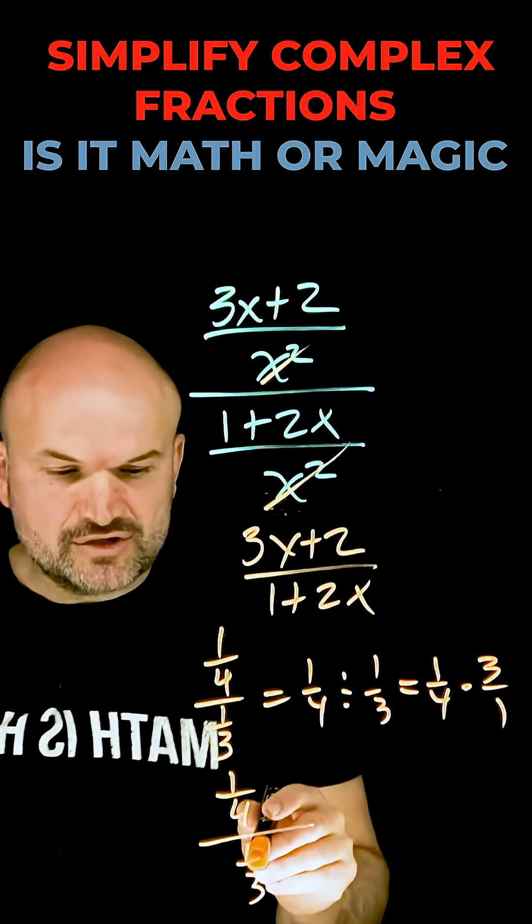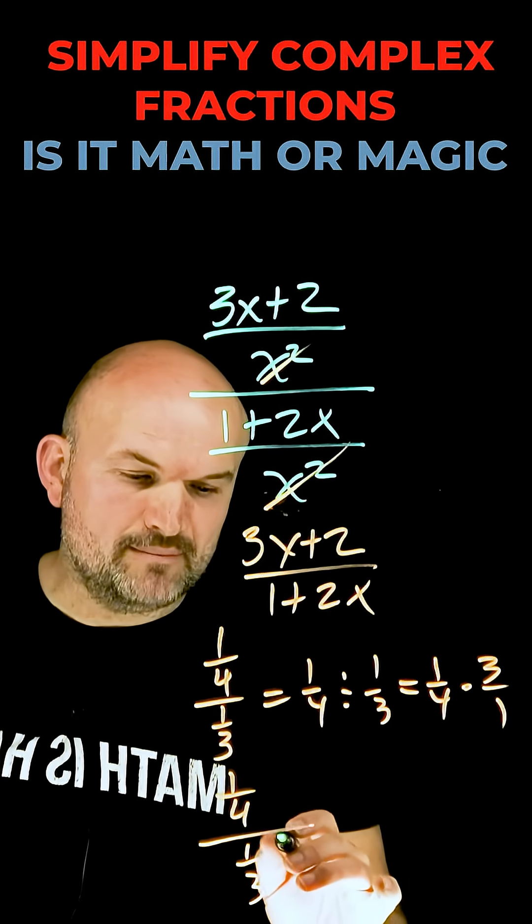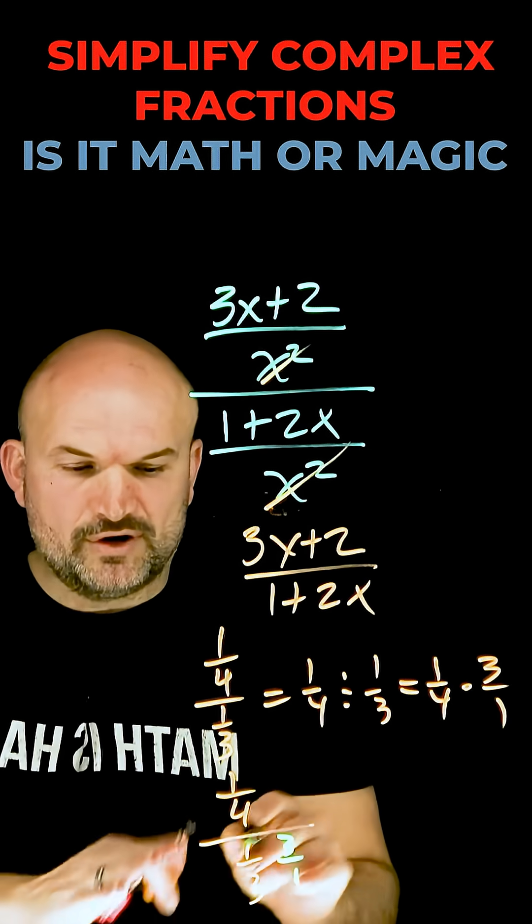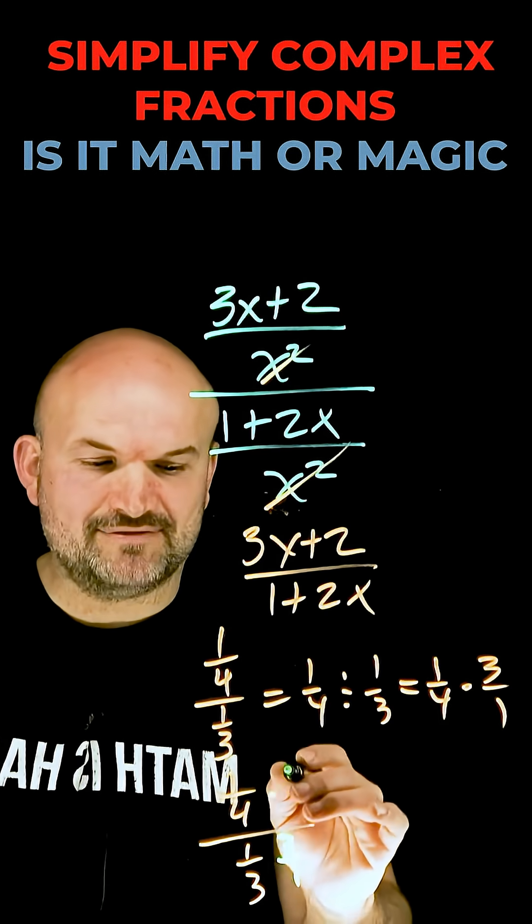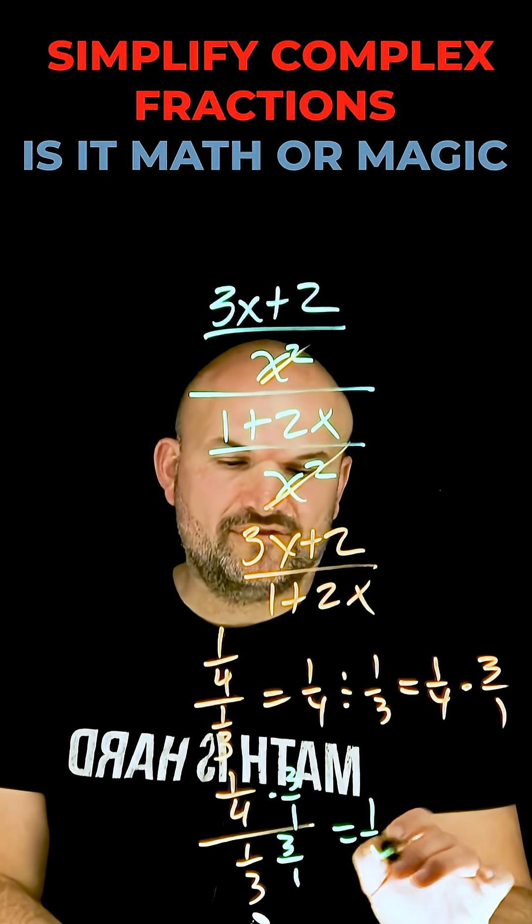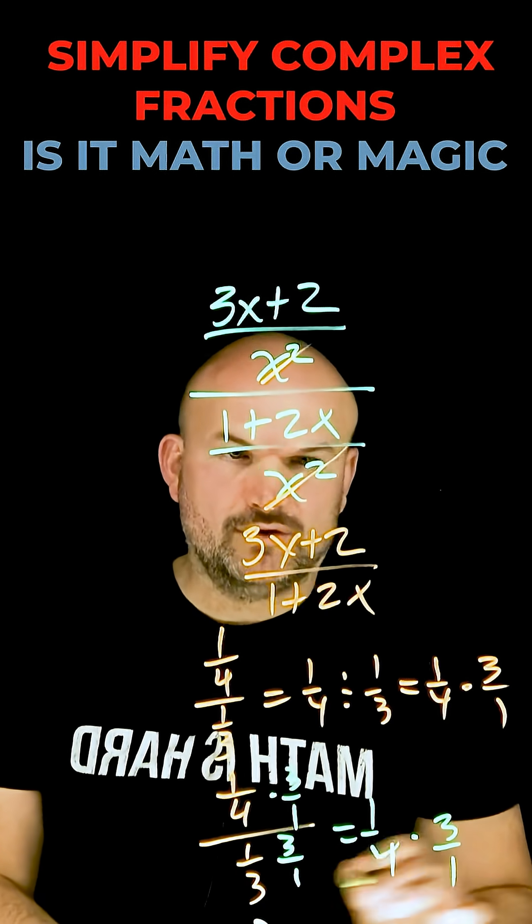Because 5 divided by 1 is 5. So if I want to get rid of this one-third, I want to multiply it by its reciprocal. One-third times 3 over 1 is just going to be 1. Whatever I do in my denominator, I have to do in my numerator. That's how we get this one-fourth times 3 over 1.